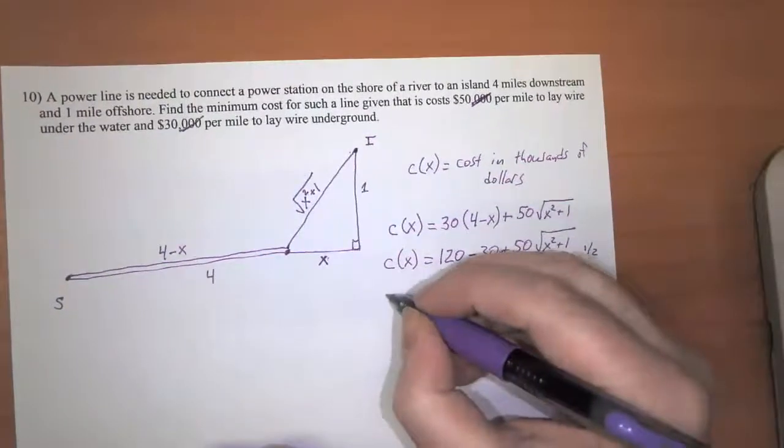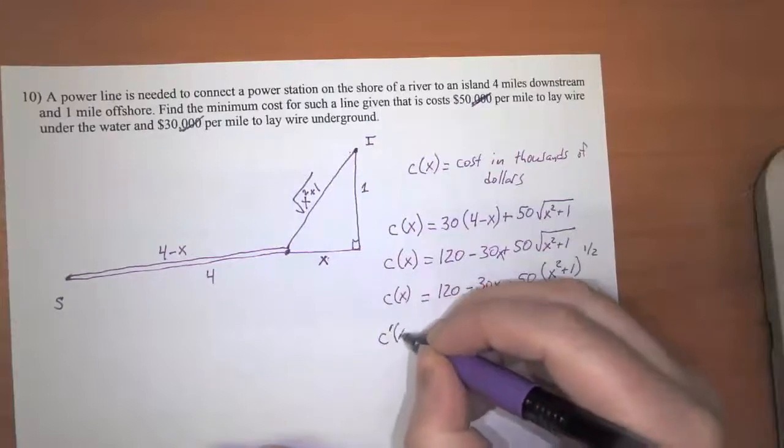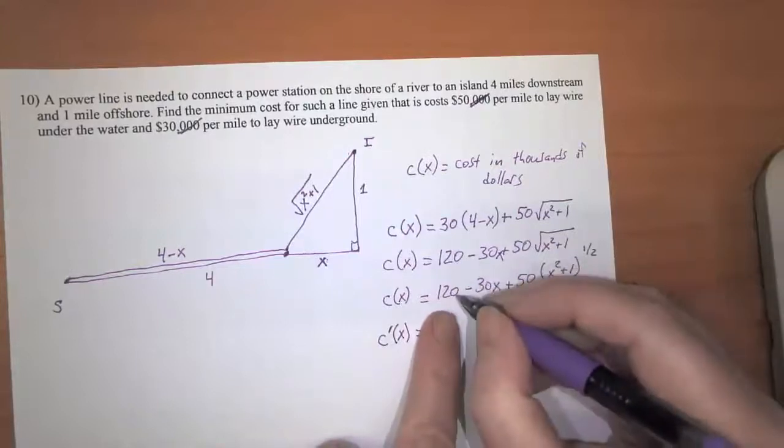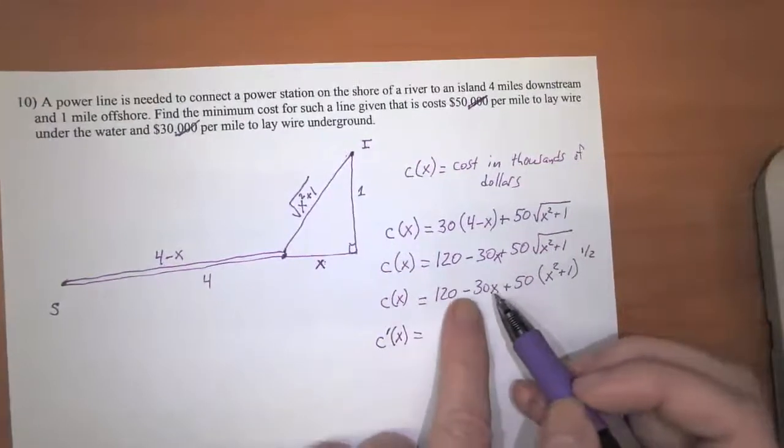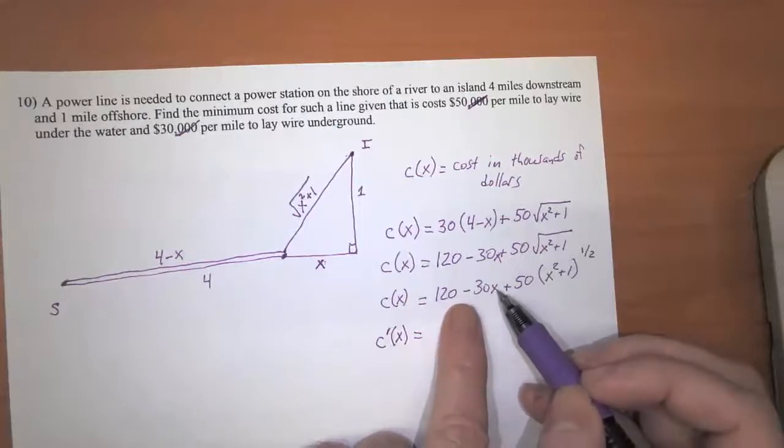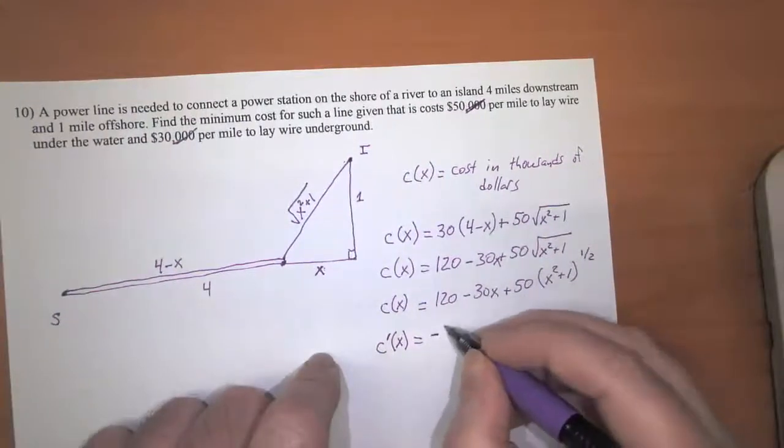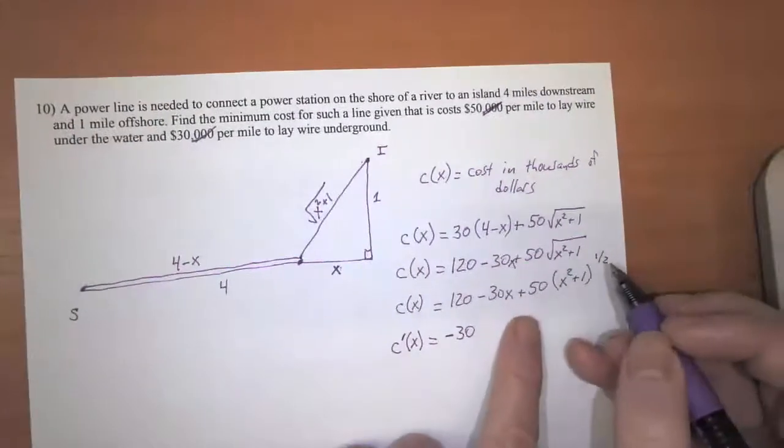So what is the derivative of that? Well, we'll just go term by term. What's the derivative of 120? 120 is a constant so that derivative is zero. What's the derivative of negative 30x? This is just a linear term so the derivative of that is negative 30.